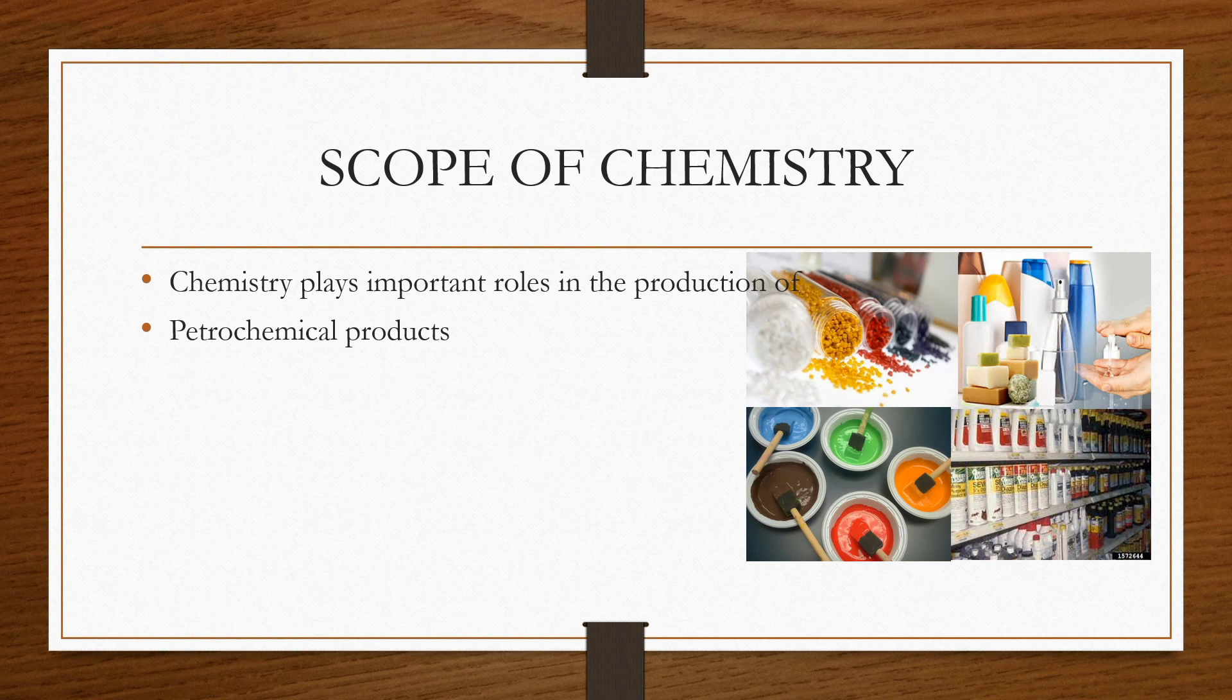Examples of petrochemical products include: plastics, soaps, detergents, fertilizers, explosives, insecticides, pesticides, rubbers, paints, pigments, dyes, and resins.